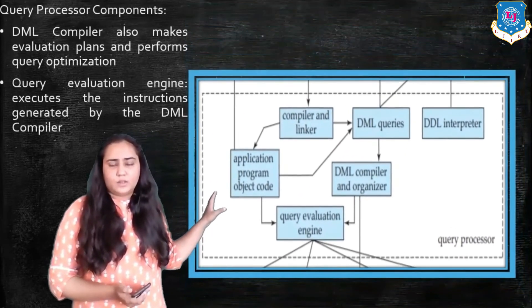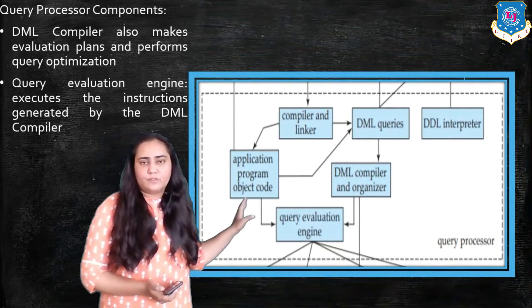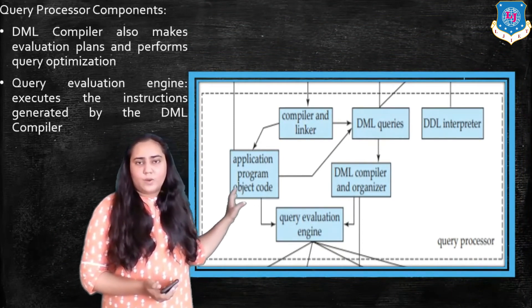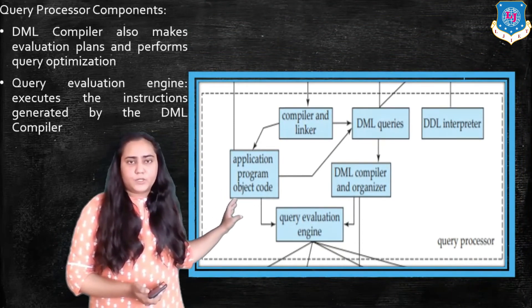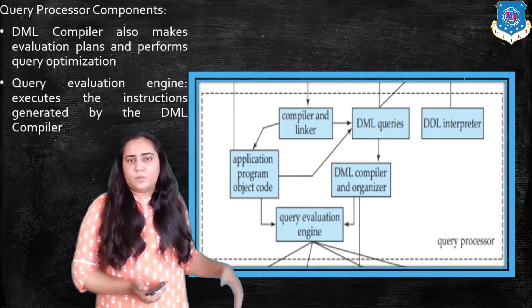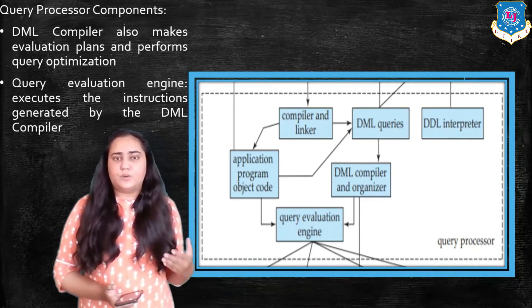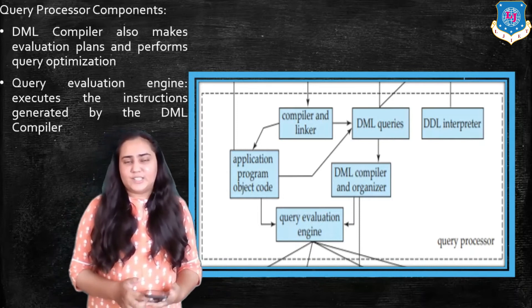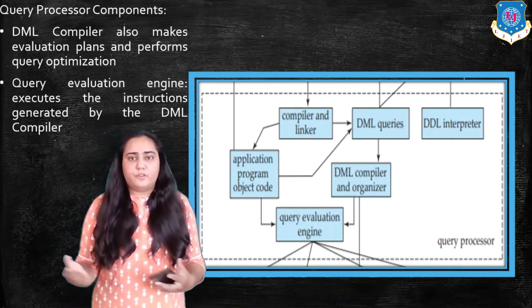And let me just go back there and explain to you the few things that we missed. One of them is the application program object code. I already talked about it, that when the compiler works, it's going to create a file where the translation is stored for future use.